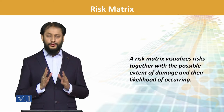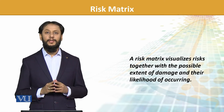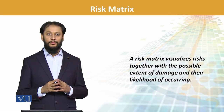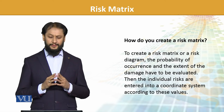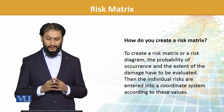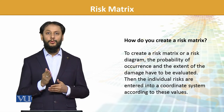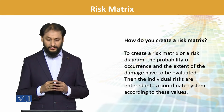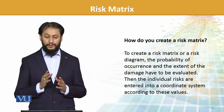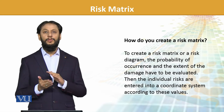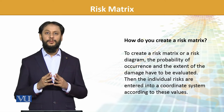A risk matrix visualizes risk together with the possible extent of damages and their likelihood of occurring — how much impact they can have and what their likelihood is, that is reflected in it. To create a risk matrix — a risk diagram as it is called — the probability of occurrence plays a very important role. And the extent of damage, i.e., if it occurs then how much impact will come, that is being evaluated. Then the individual risks are entered in a coordinate system according to those values — those probabilities and possible impacts are used in the representation of the risk matrix.